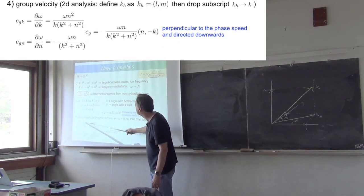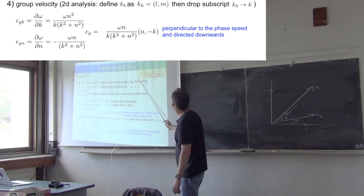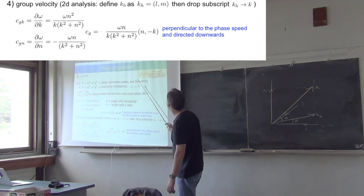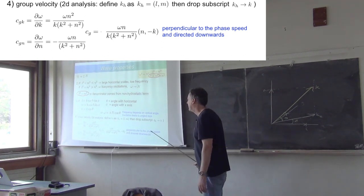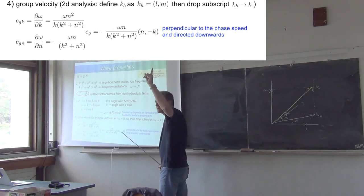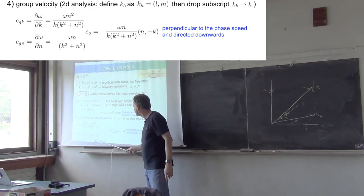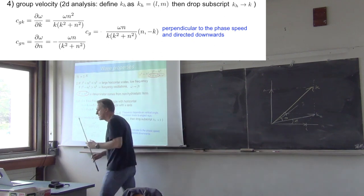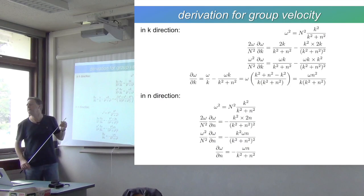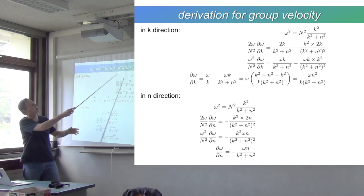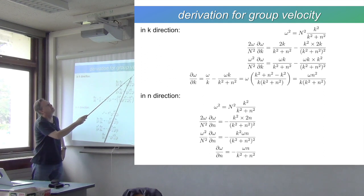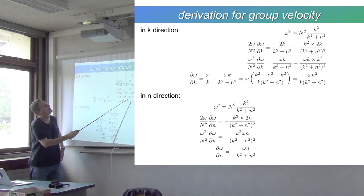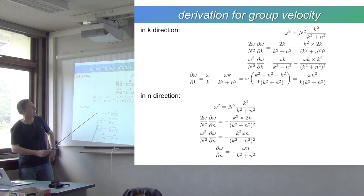The horizontal group speed will be dω/dk. You take this expression and calculate dω/dk — this is k — and that gives you this. Then the vertical component of the group speed is dω/dn, and it gives you this. If you don't believe me, it's all worked out on the next page. We get n²k² over k²+n² for dω/dk, and the same starting equation for dω/dn.